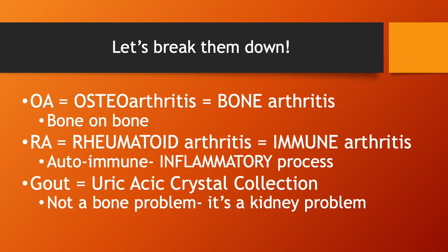Last but not least, there's gout, which is a collection of uric acid crystals. This isn't even a bone problem — you're collecting uric acid crystals because you have a kidney problem. Your kidneys are either not excreting enough uric acid, or you're making or taking in too much from your diet. What your body does when it can't get rid of something is literally start collecting it and trying to push it out through your skin. Gout is simply a collection of uric acid crystals deposited in your joints.